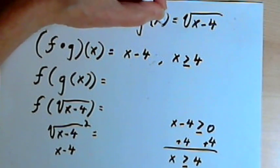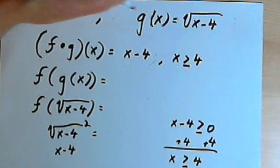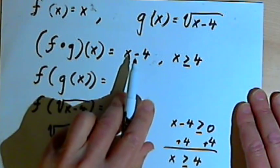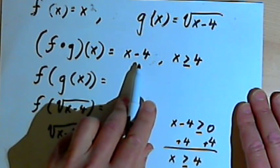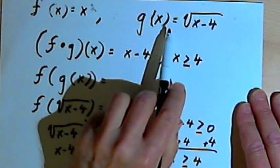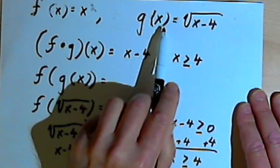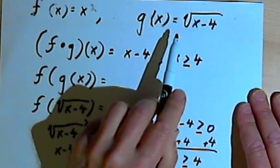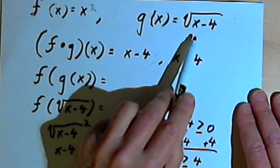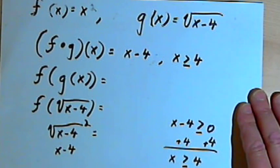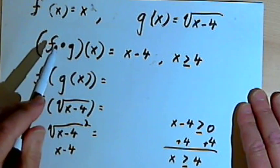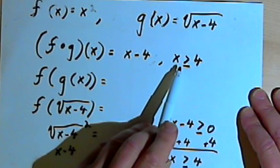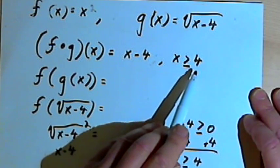When we're looking for the domain, we're doing two things. We're finding the composition and seeing if there are any restrictions on that composition — in this case there weren't. We're also looking at the individual functions, specifically the inside function, the g of x, and seeing what the restrictions on its domain are. We had restrictions there, so the restriction for the whole composition is that x has to be greater than or equal to 4.